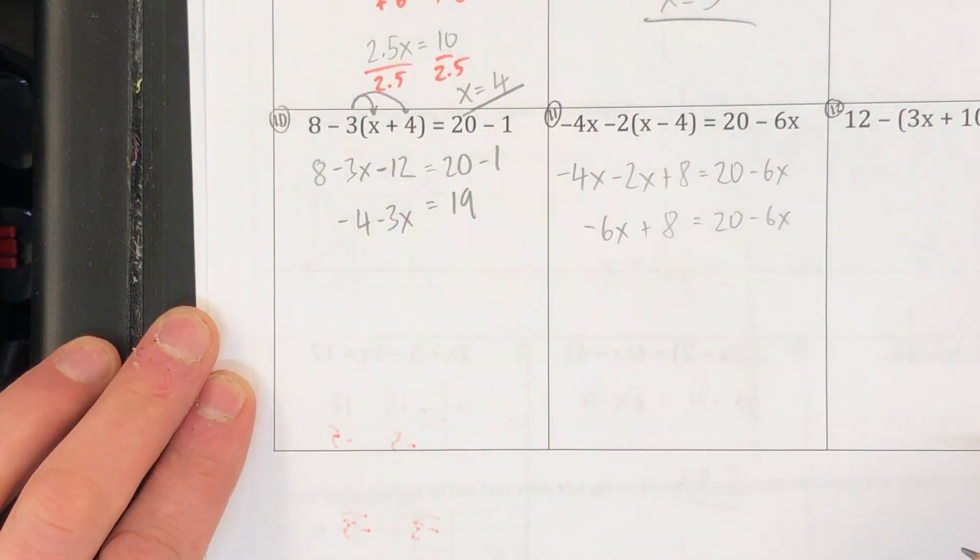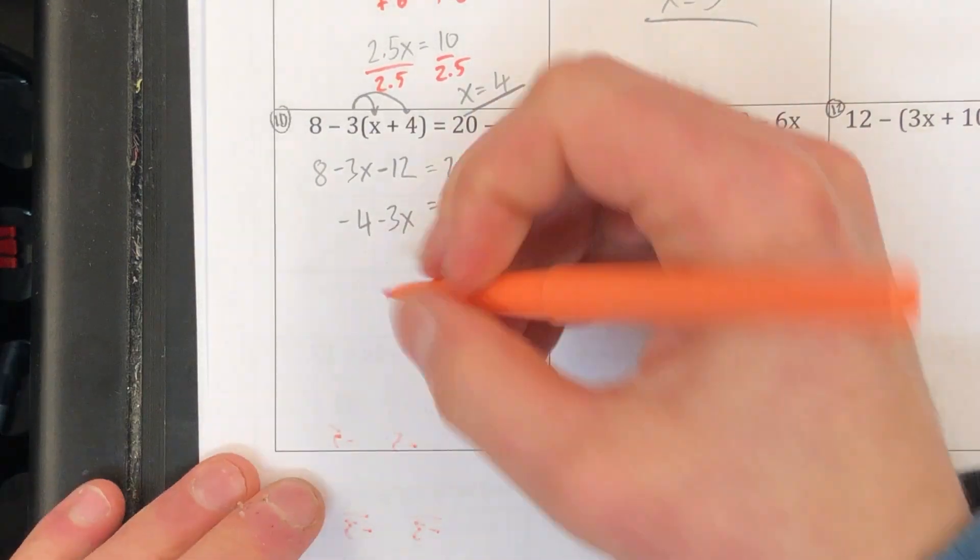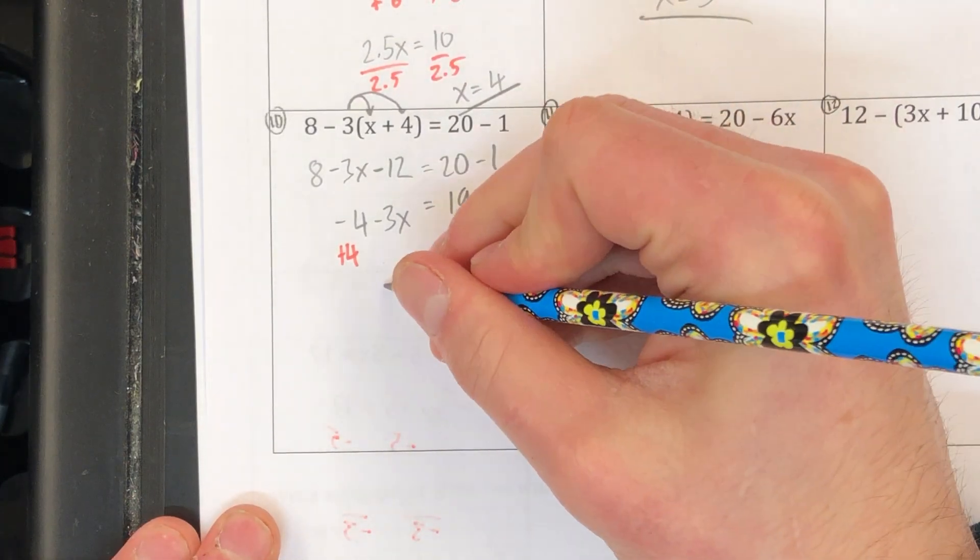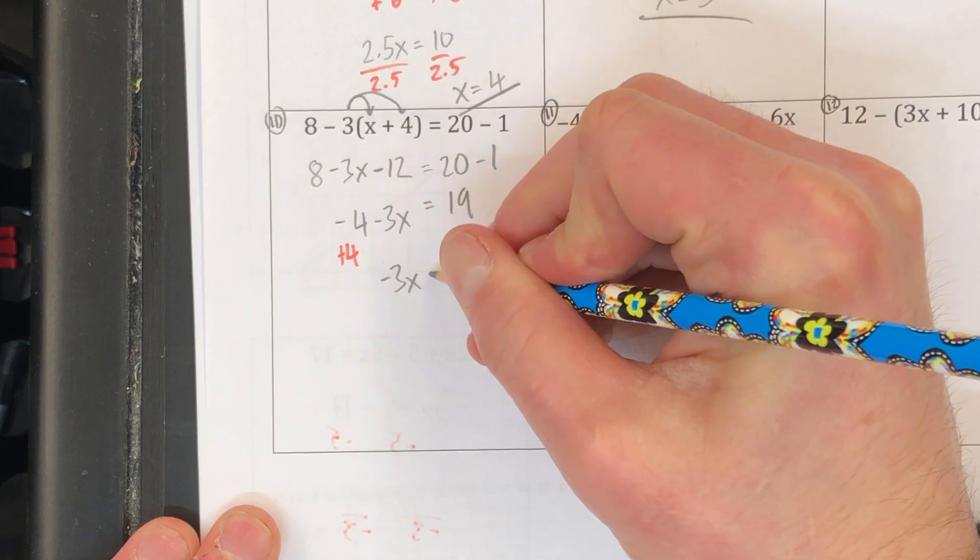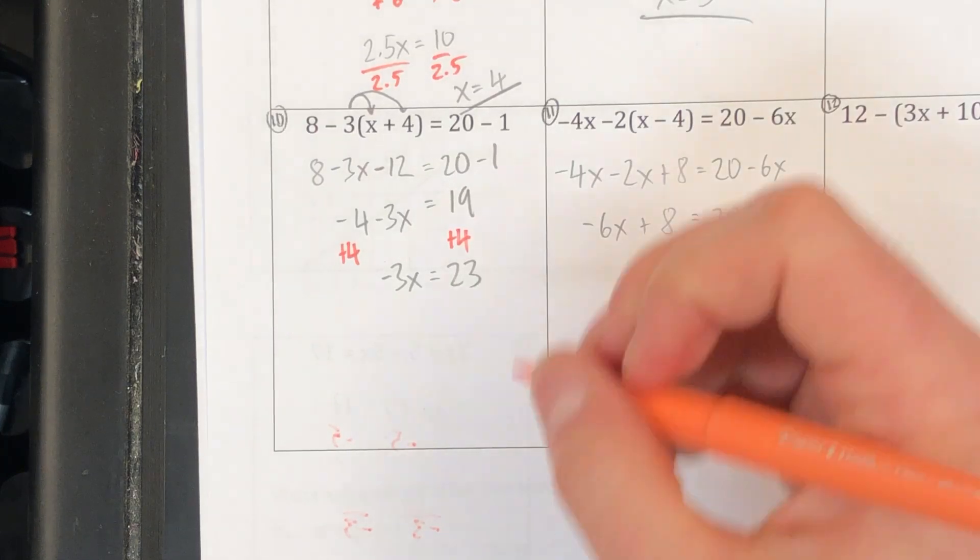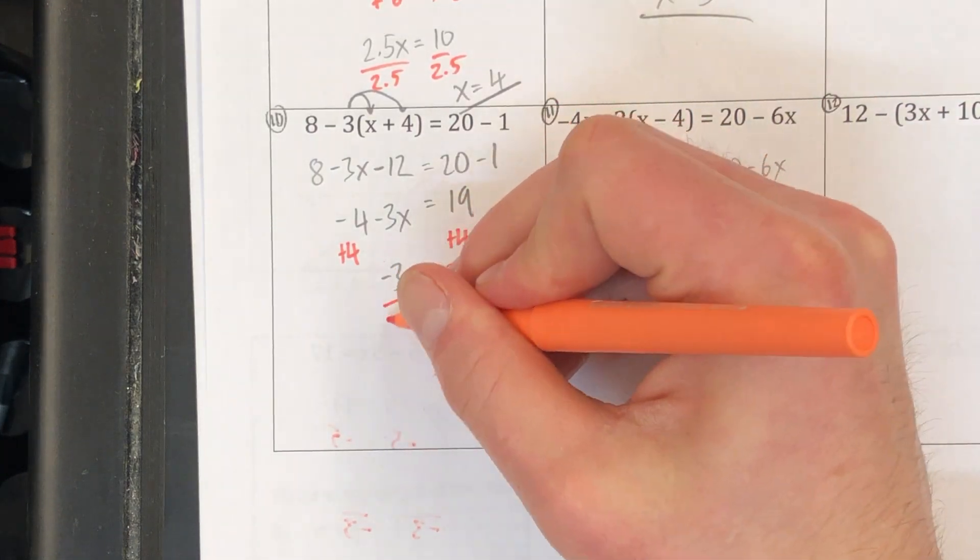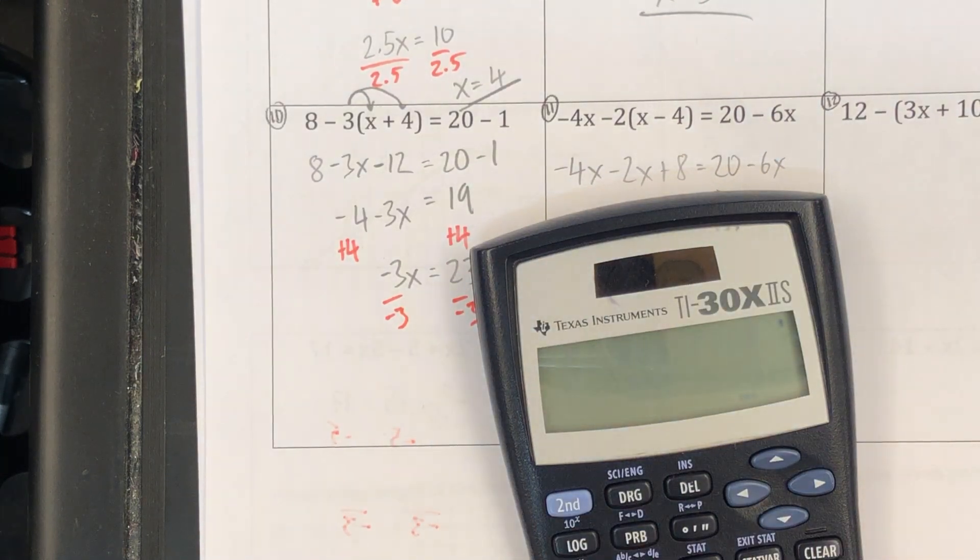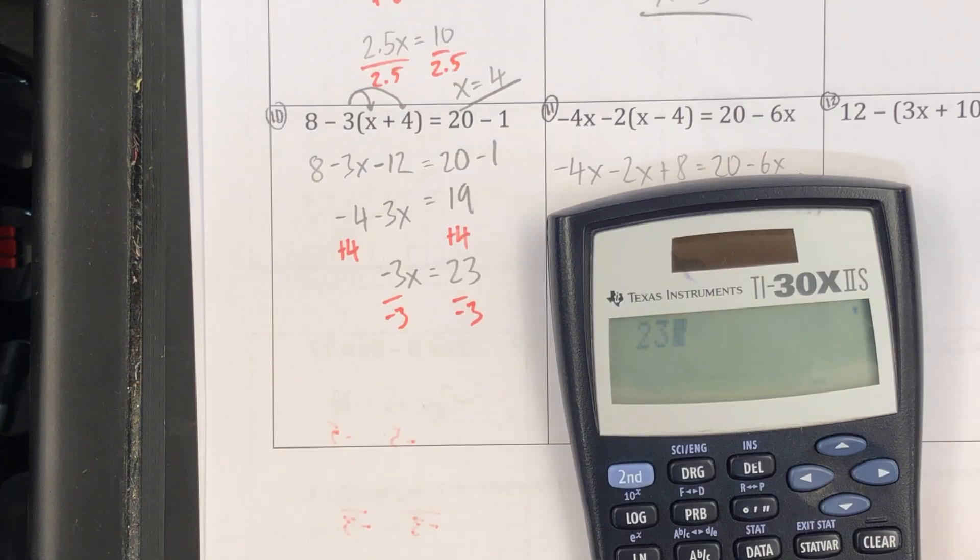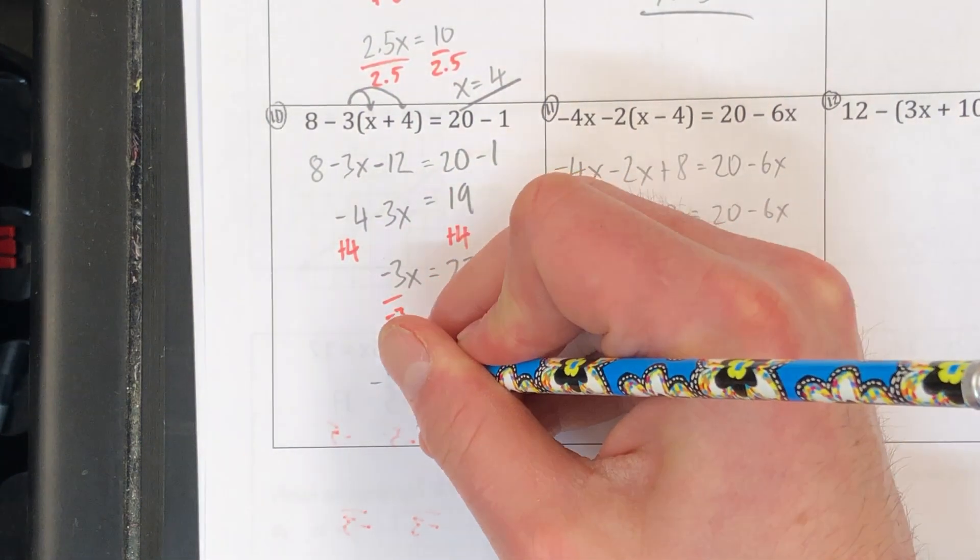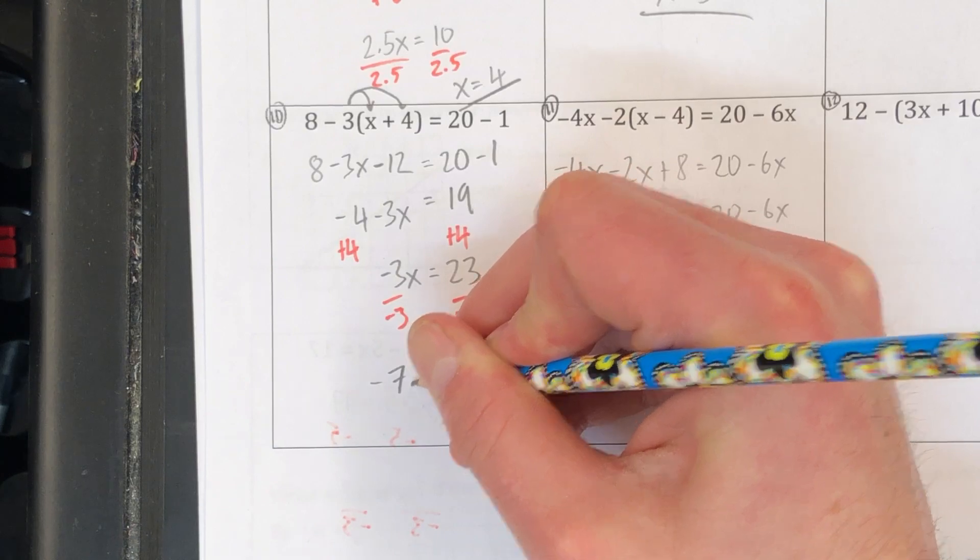I want to get x by itself, so I'm gonna do some opposites here. Let's add 4 to both sides. Leaves me with negative 3x is equal to 23. I want to do opposites again, or inverse operations. Divide by negative 3, divide by negative 3, and I'm left with some kind of obscure decimal. Let's see what we get. 23 divided by negative 3 leaves me with negative 7 and 2 thirds as my final answer.